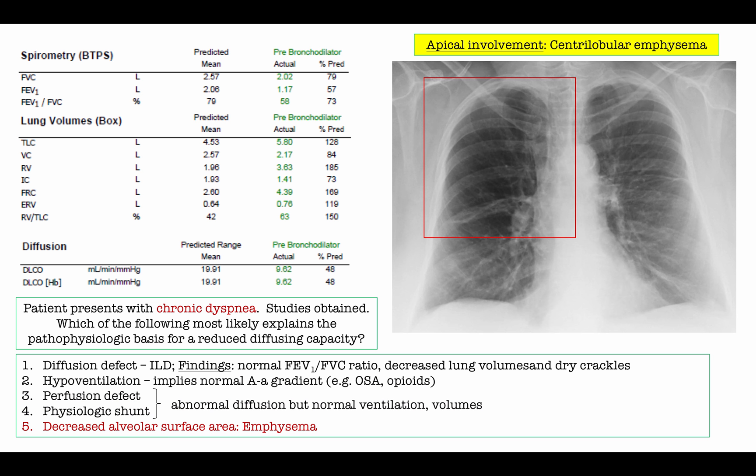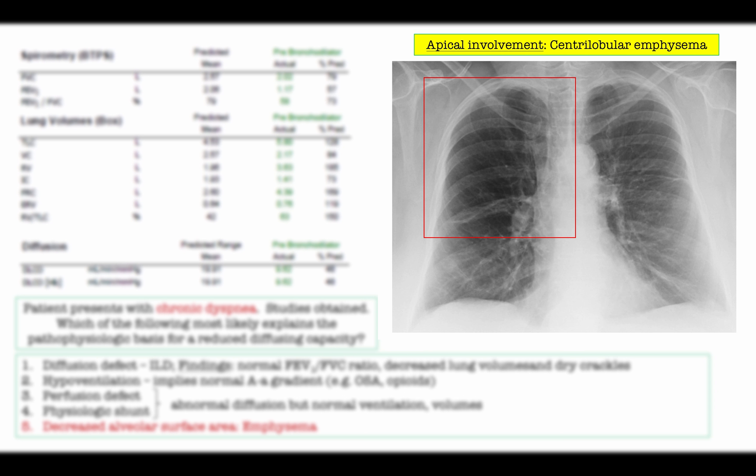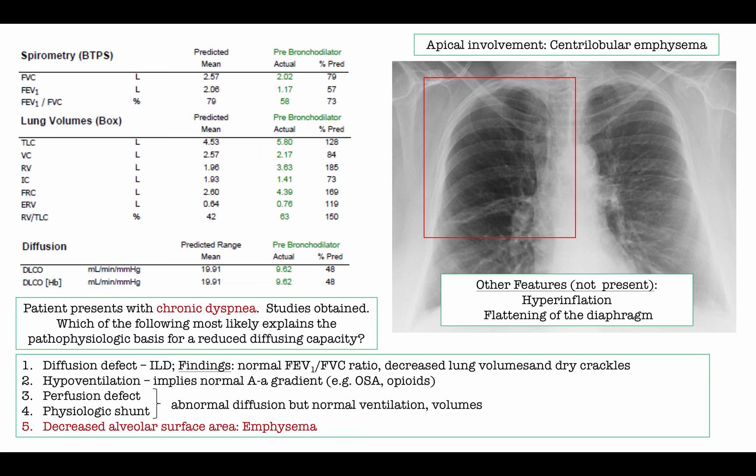Let's look at the chest x-ray. You do not need to interpret it — the PFTs provided the diagnosis. But the chest x-ray does show apical involvement as seen in centrilobular emphysema. The right apex is almost devoid of normal lung markings. Other features that may be present in COPD include hyperinflation and flattening of the diaphragm, neither of which were present in this patient. The PFT, symptoms, and chest x-ray are all consistent with emphysema, characterized by loss of alveolar surface area.